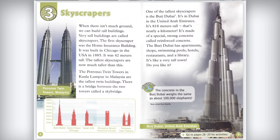When there isn't much ground, we can build tall buildings. Very tall buildings are called skyscrapers. The first skyscraper was the Home Insurance Building, built in Chicago, USA, in 1885. It was 42 meters tall. The tallest skyscrapers are now much taller. The Petronas Twin Towers in Kuala Lumpur, Malaysia, are the tallest twin buildings.